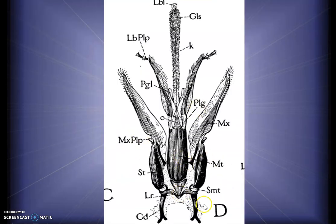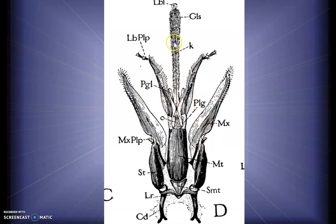This is the diagram of the proboscis. The lower segment includes the cardo and stipes — the maxillary parts. Together with the labium, there is the submentum, mentum, paraglossa, and glossa. These structures together form a hollow tube through which the tip — the flabellum — can be dipped into the nectar and drawn into the mouth.